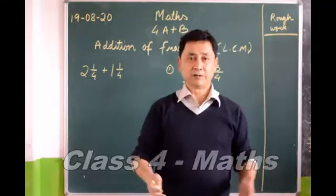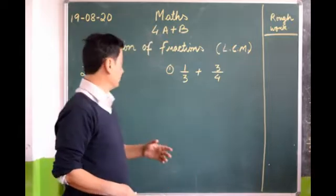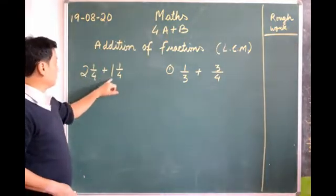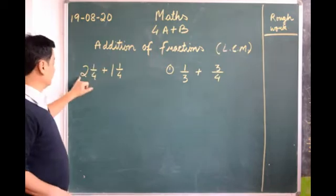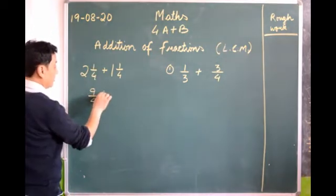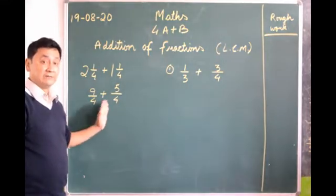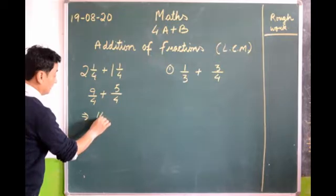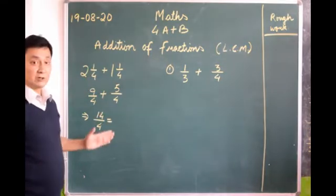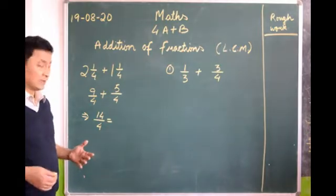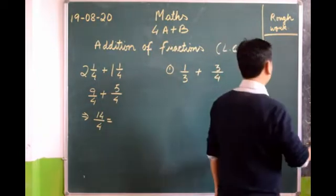Last week we were doing addition of like fractions where the denominators are the same. So we have a fraction: 2 and 1/4 plus 1/4. You see that the denominators are the same, so what should we do? Convert: 2 becomes 8/4, plus 1 is 9/4. Then plus 1/4 gives 5/4. When the denominators are the same we add straight away, so 9 plus 5 is 14/4. In class we don't reduce because there is a lot to do in one sum and you may get distracted or puzzled.